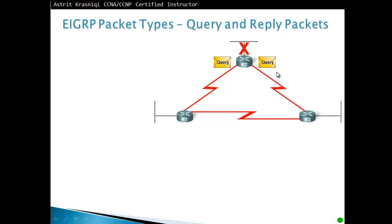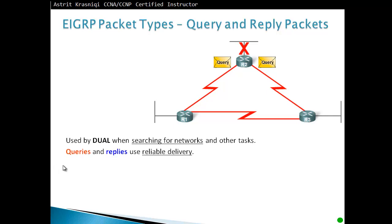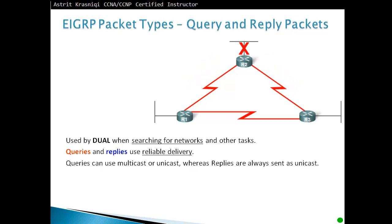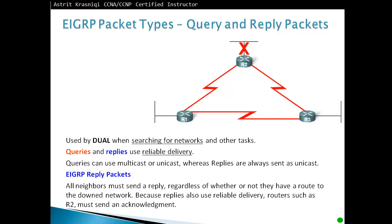Query packets: once a router updates its neighbors about a lost network, it can query neighbors in case they know how to reach that network. Queries are used by DUAL when searching for a network. Queries and replies use reliable delivery — neighbors acknowledge the query and then send a reply. Queries can use multicast or unicast, while replies are always sent as unicast. All neighbors must send a reply regardless of whether they have a route to the downed network, because replies also use reliable delivery. If a neighbor fails to reply, the router enters a state called Stuck in Active.